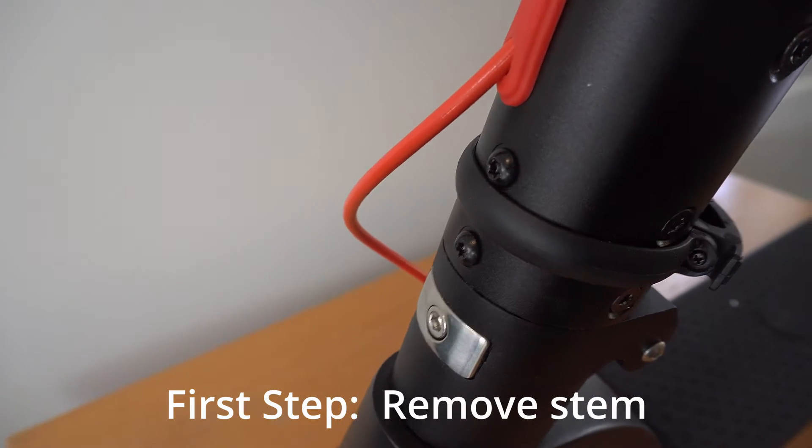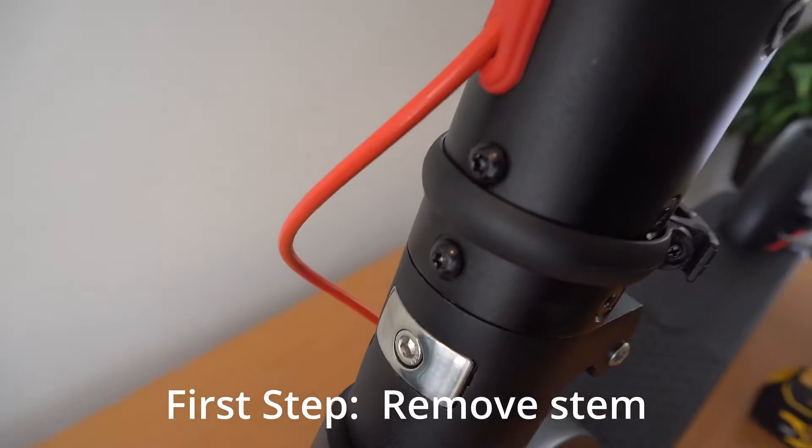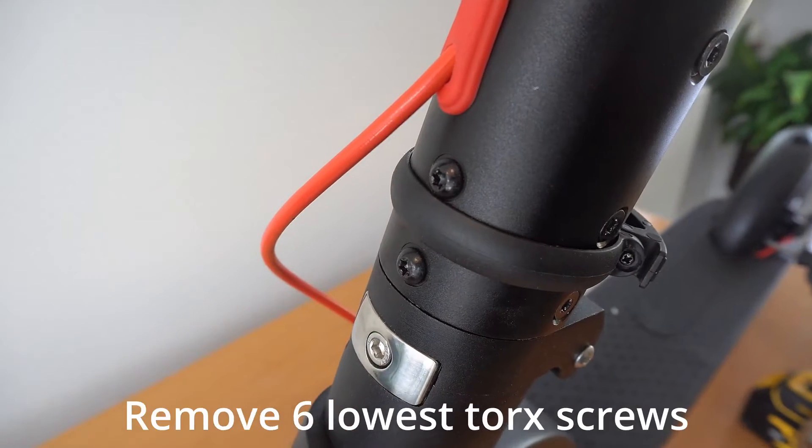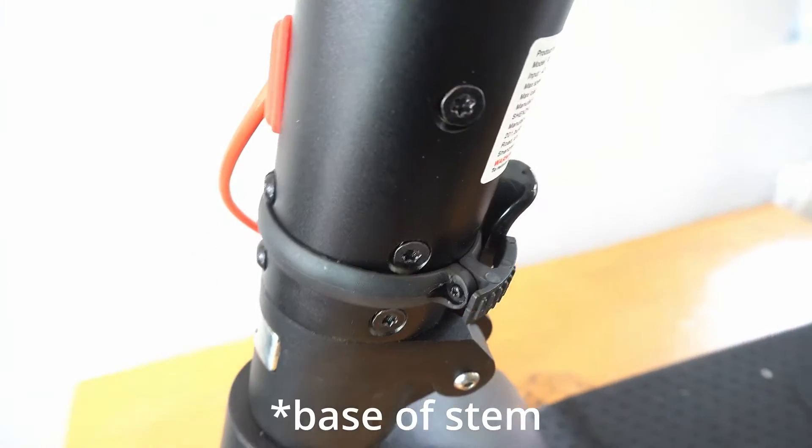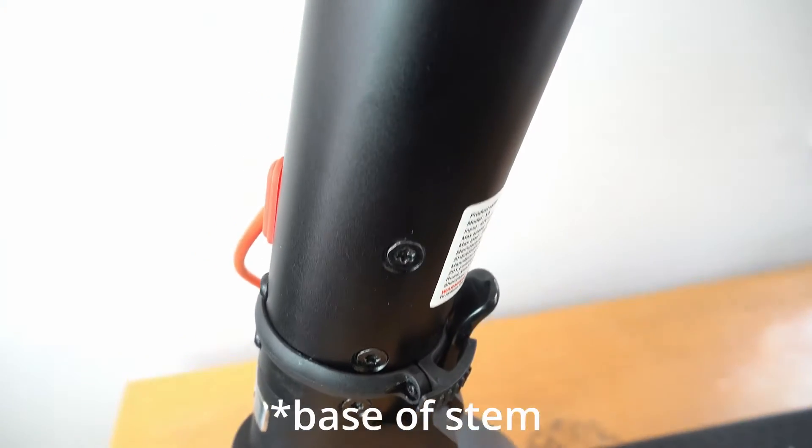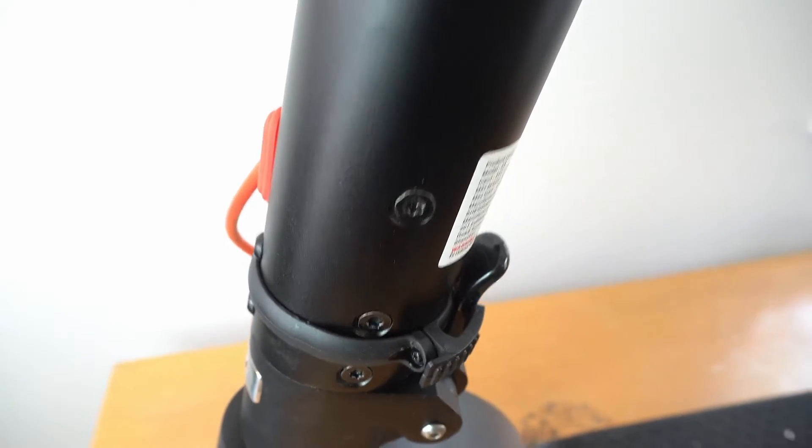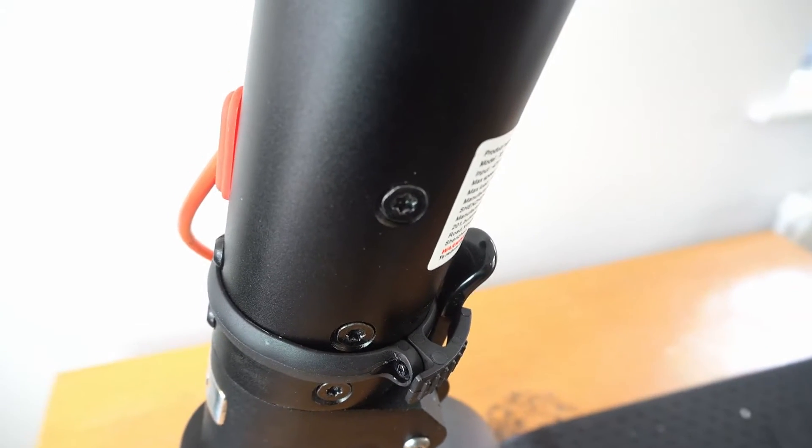You first need to remove the stem from the base of the scooter. To do that, remove the six Torx screws located at the base of the scooter. Please note there are two different types of screws. When you put them back together again, make sure the dome ones go at the front.